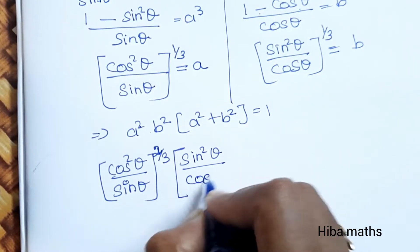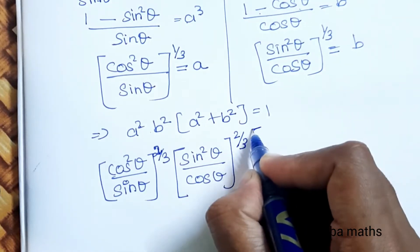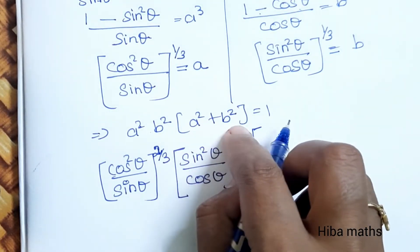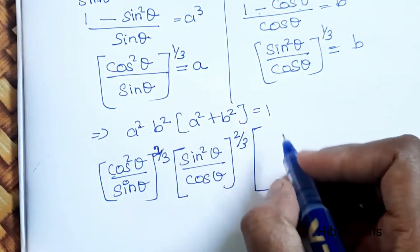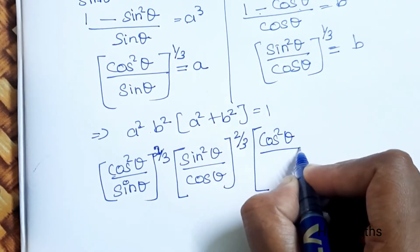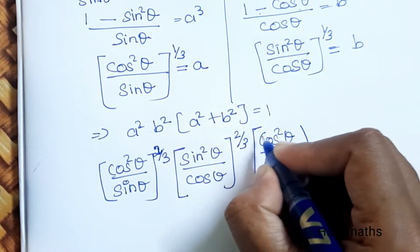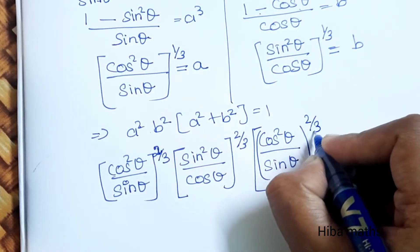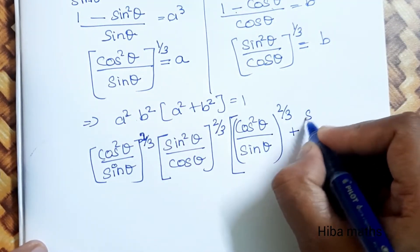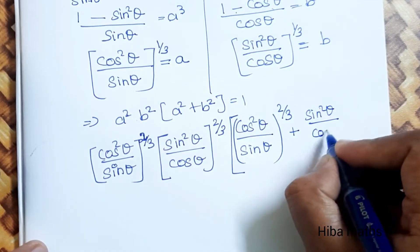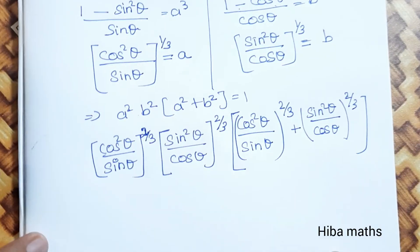So a squared is cos square theta divided by sin theta to the power 1 by 3, squared, giving power 2 by 3. Similarly b squared is sin square theta divided by cos theta to the power 2 by 3. Then a square plus b square gives cos square theta divided by sin theta to the 2 by 3, plus sin square theta divided by cos theta to the 2 by 3.